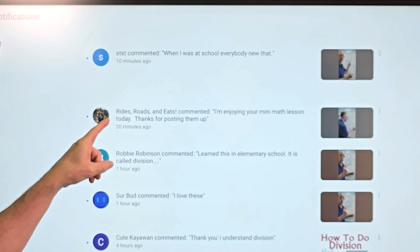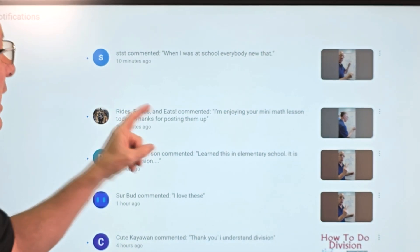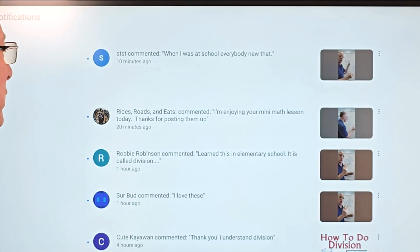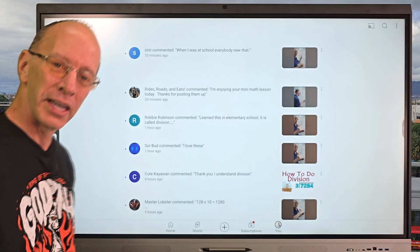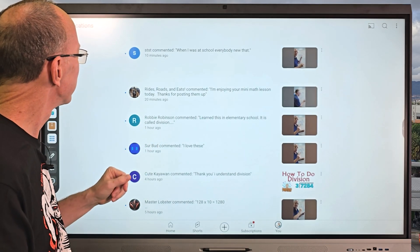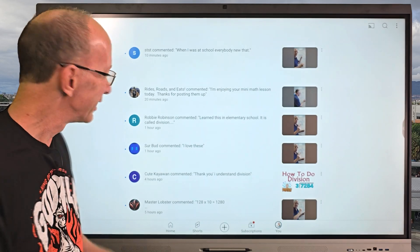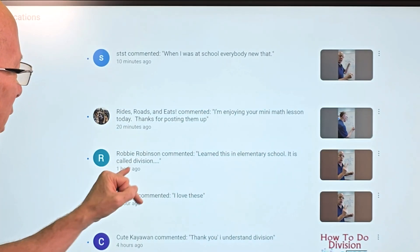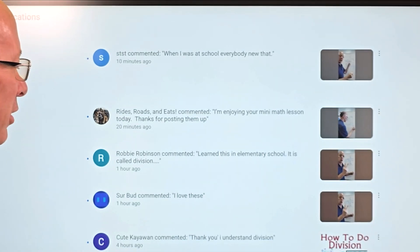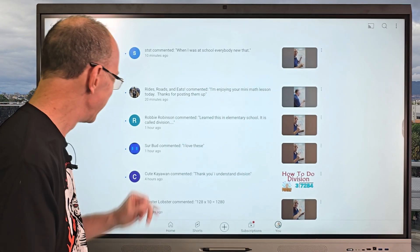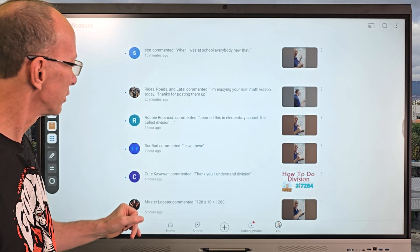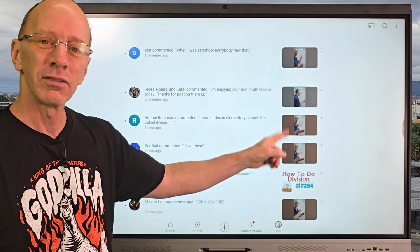We have a comment from Rides, Roads, and Eats commented, I'm enjoying your mini math lessons today. Thanks for posting them. Well, thank you very much. I like the picture of the dog. Is that your dog right there? I wonder if it is. It's a cute little dog there. So we have Robbie Robinson commented, learned this in elementary school. It is called division. Yeah, it is. And so we have also here, Sir Bud commented, I love these. So I'm doing a lot of like shorts.